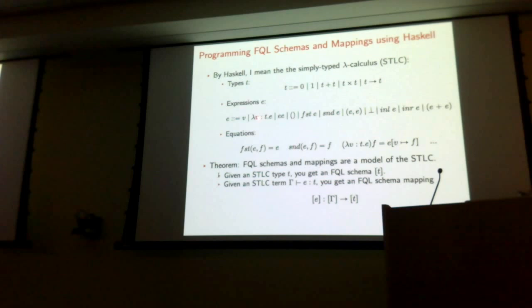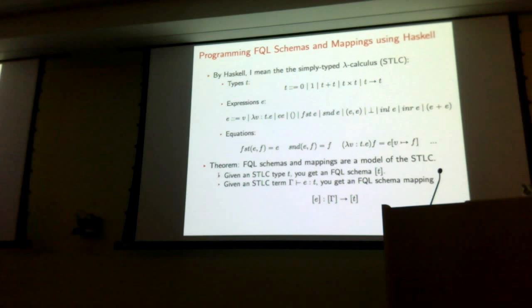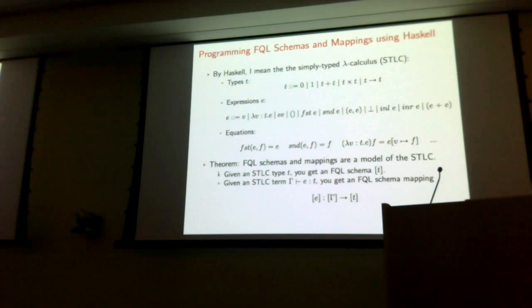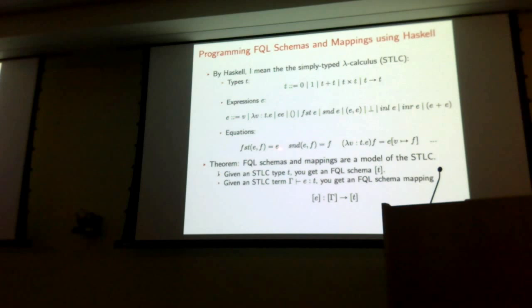Expressions in the simply typed lambda calculus look like this: expression E is either a variable, a lambda abstraction, a function application, unit which gives you something of type one, operations on pairs — first projection, second projection, or pairing up. You have the operation bottom which takes an element of the empty type and turns it into anything — undefined if you want. You have injections inl and inr, and something that looks like a case expression in Haskell. The equations on this syntax say, for example, that the first projection of a pair is literally the first element, or that when you apply a lambda abstraction to an argument the result is the body with the argument substituted in.